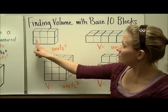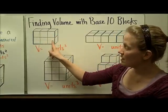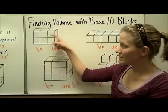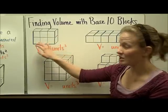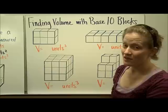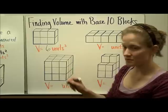We look at this first figure. You can see that there are 3 cubic units on the bottom, and then there's another row on top that's exactly the same size and shape. So 1, 2, 3, 4, 5, 6. The volume of this figure would be 6 cubic units.